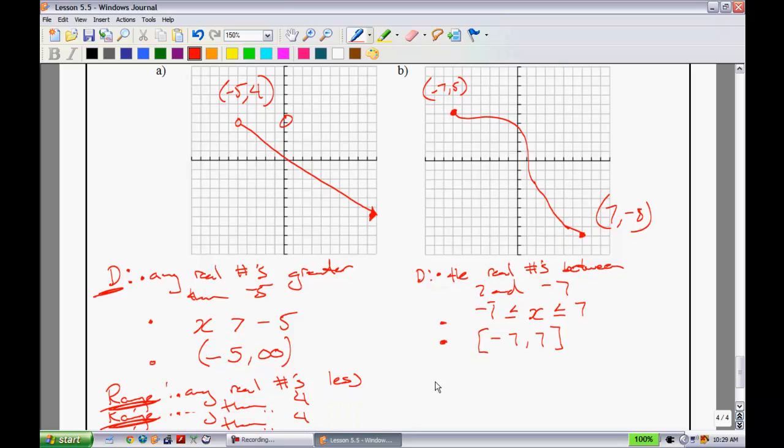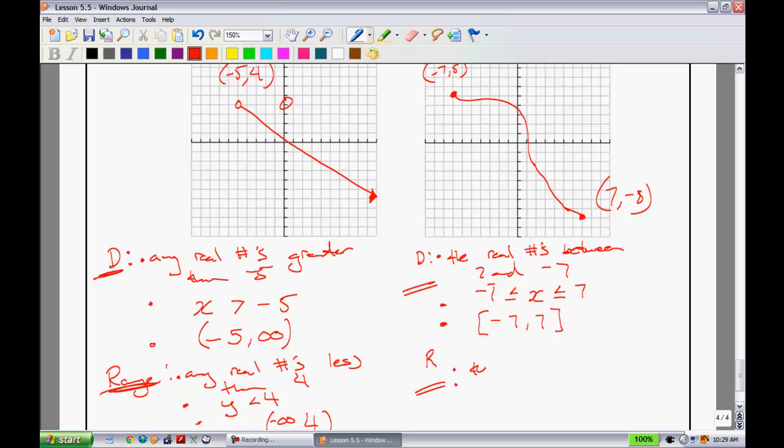The range down here. For the range, we would say that we can have values that go, so the real numbers between what do we have here? 5 and negative 8.